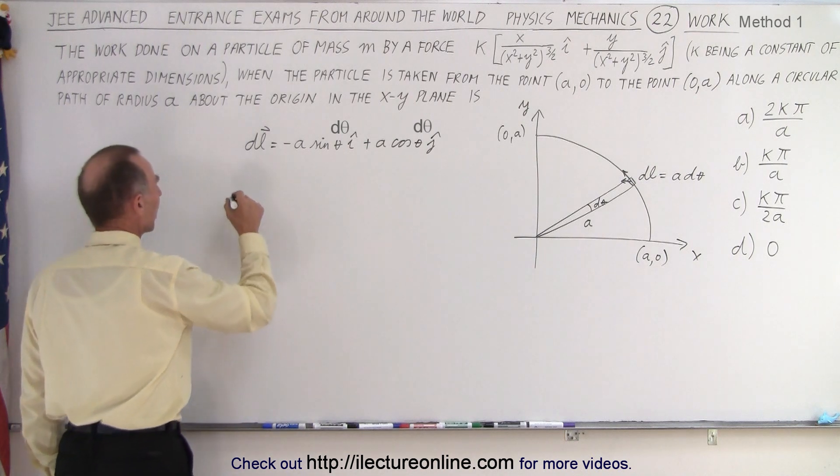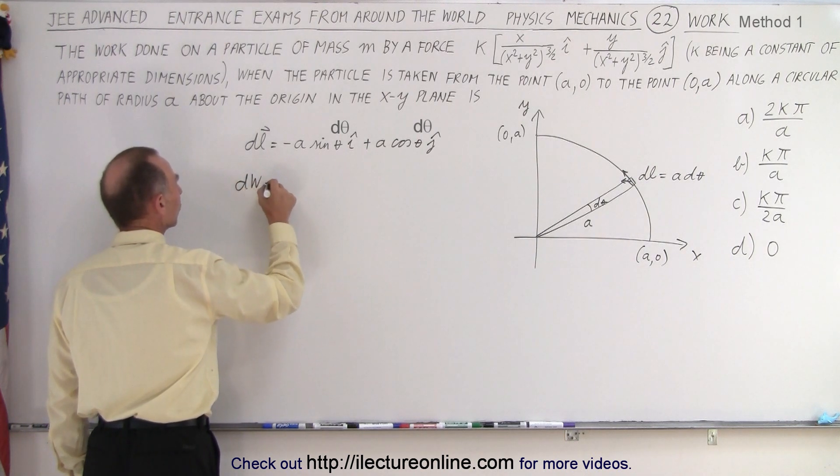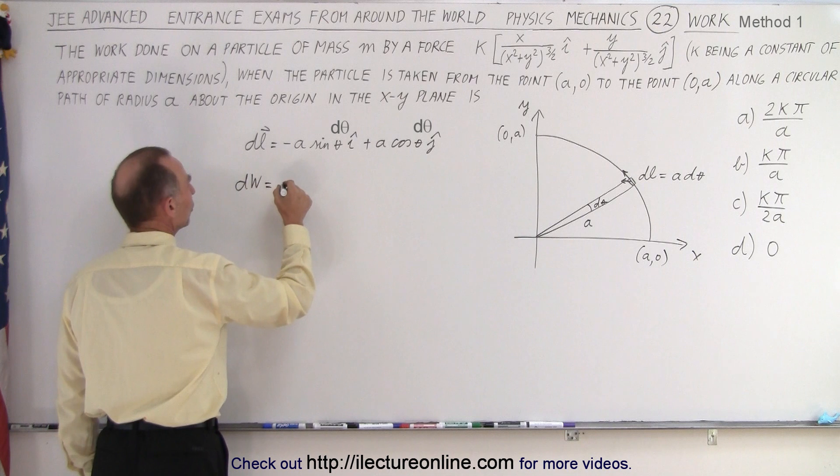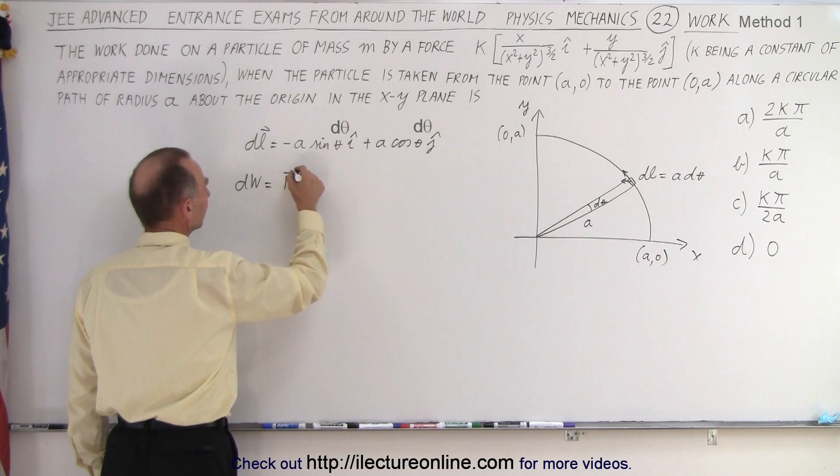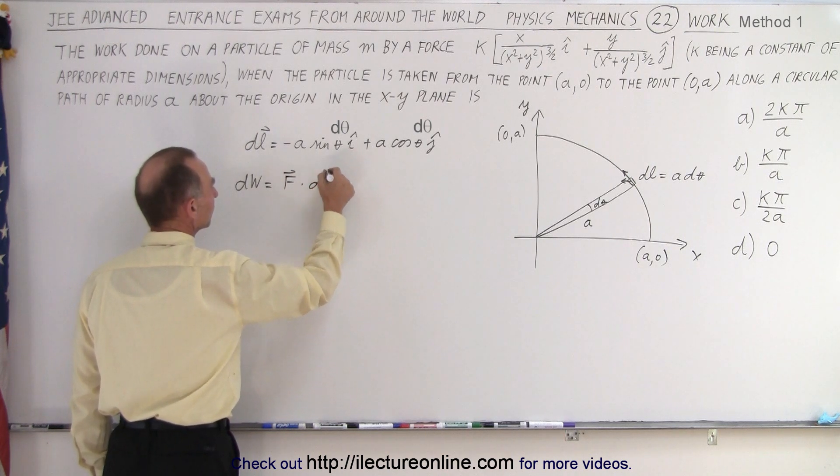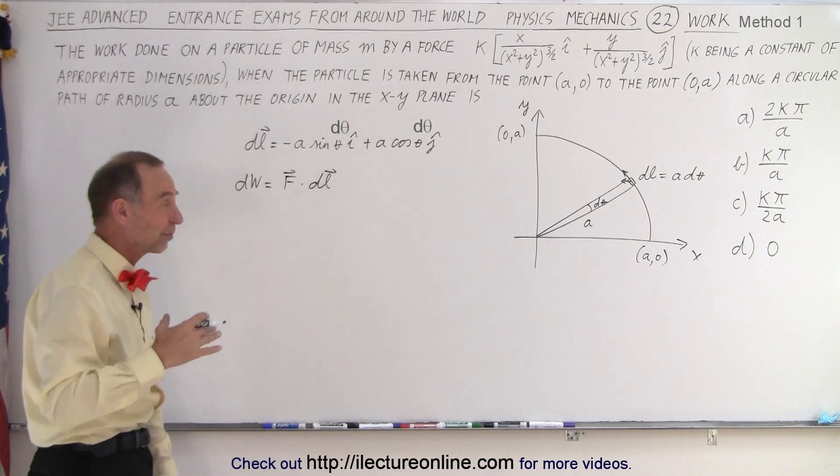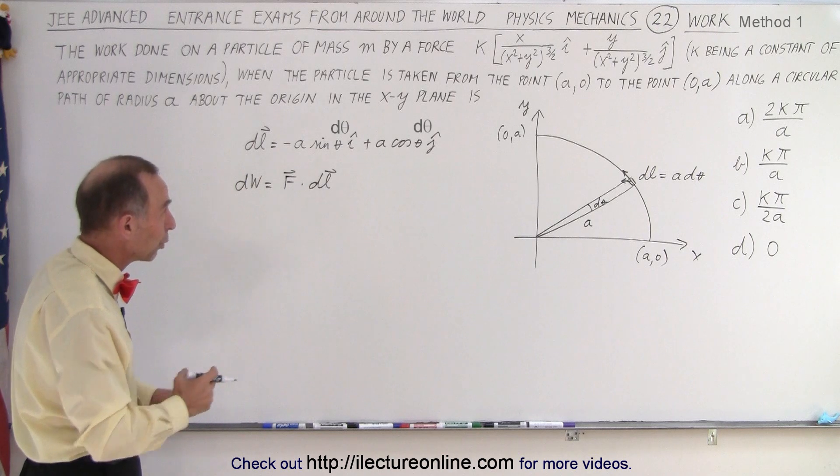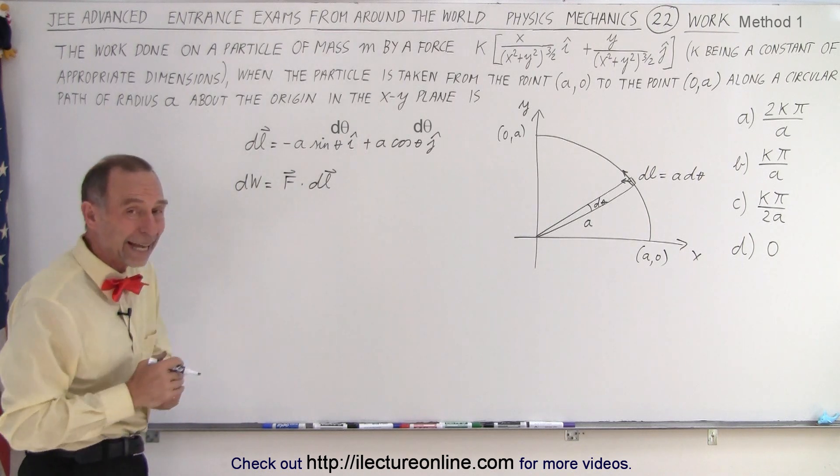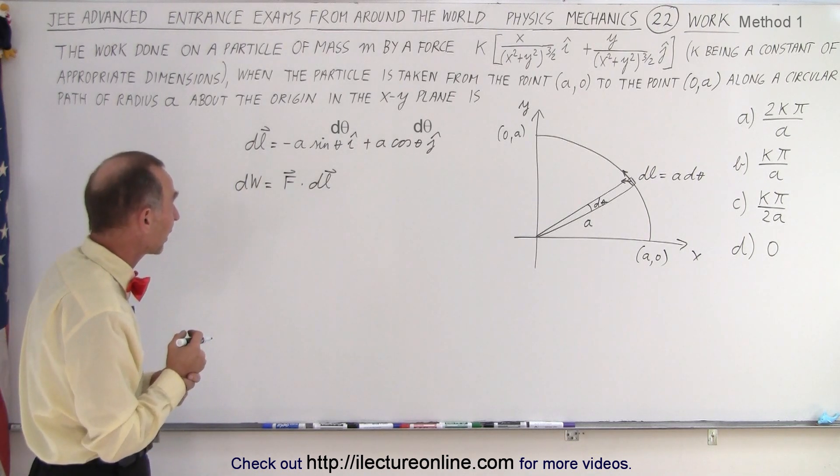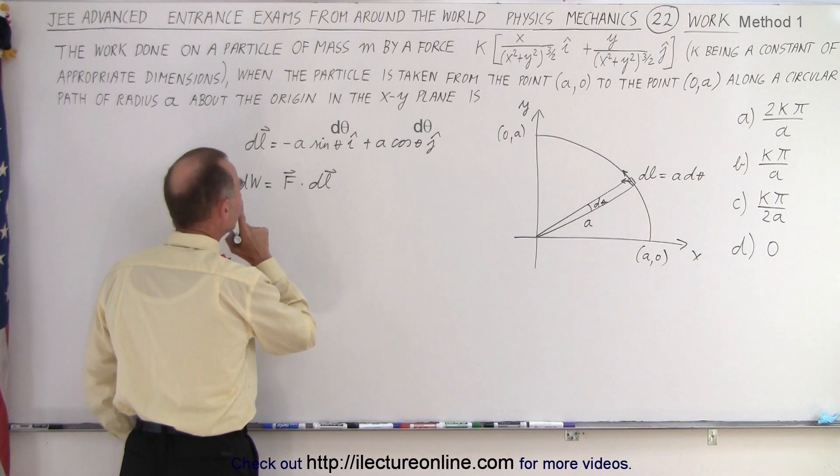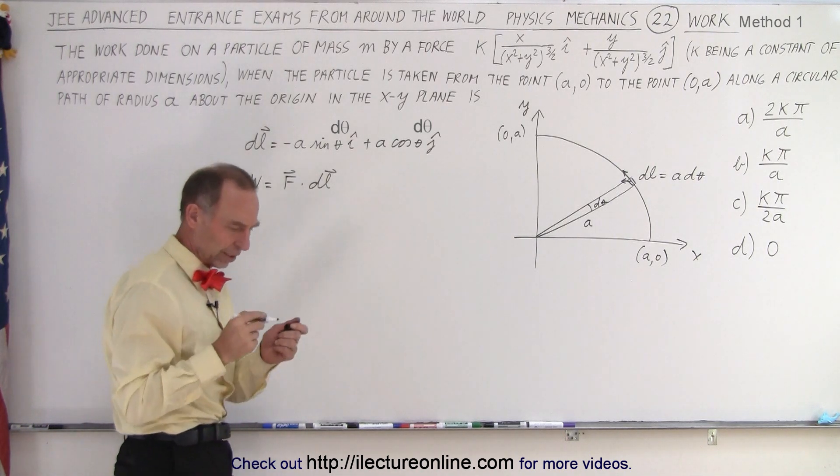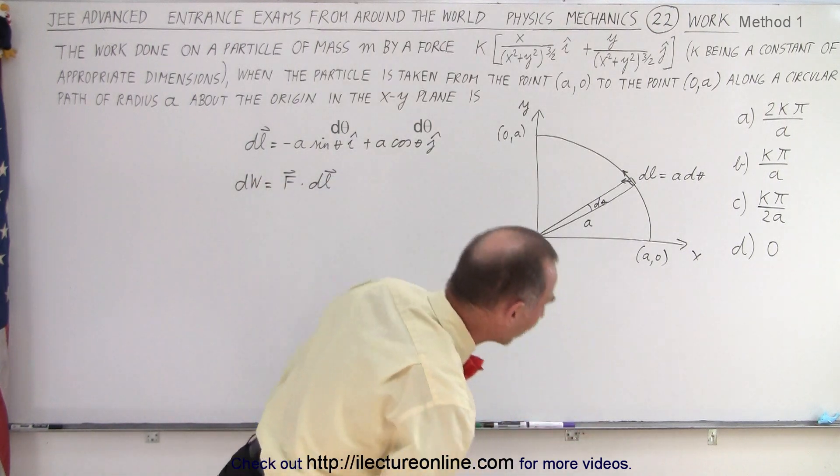in the J direction. So we can write DL as a vector component. So now when we write dW, a small amount of work done, that's equal to the product, the dot product of F dot DL. Like this, which is F times DL times the cosine of the angle between them, or we can simply multiply the X components and the Y components together.